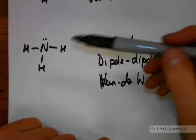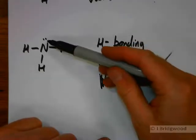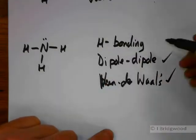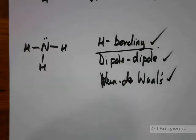But the trump, of course, is the fact that nitrogen here is one of the three most electronegative elements in the periodic table. And it has an available lone pair of electrons. So hydrogen bonding is the one that will predominate in that particular case.